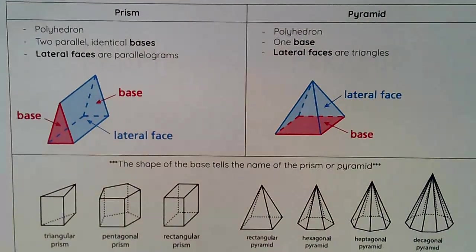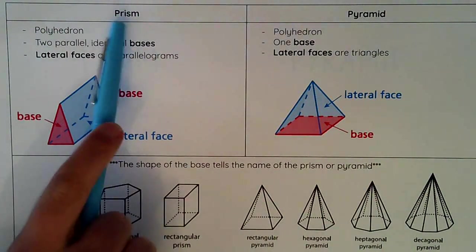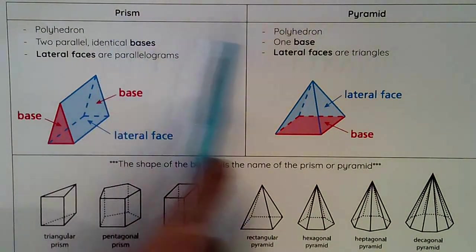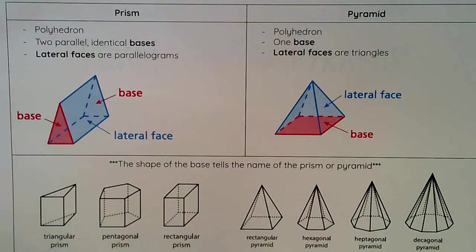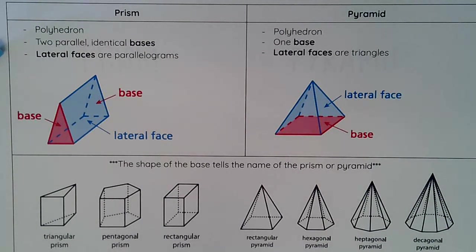Today we are going to talk about two different types of polyhedra: prisms and pyramids. Let's start with prisms. Prisms are polyhedra — they have two parallel identical bases and their lateral faces are parallelograms, typically rectangles.